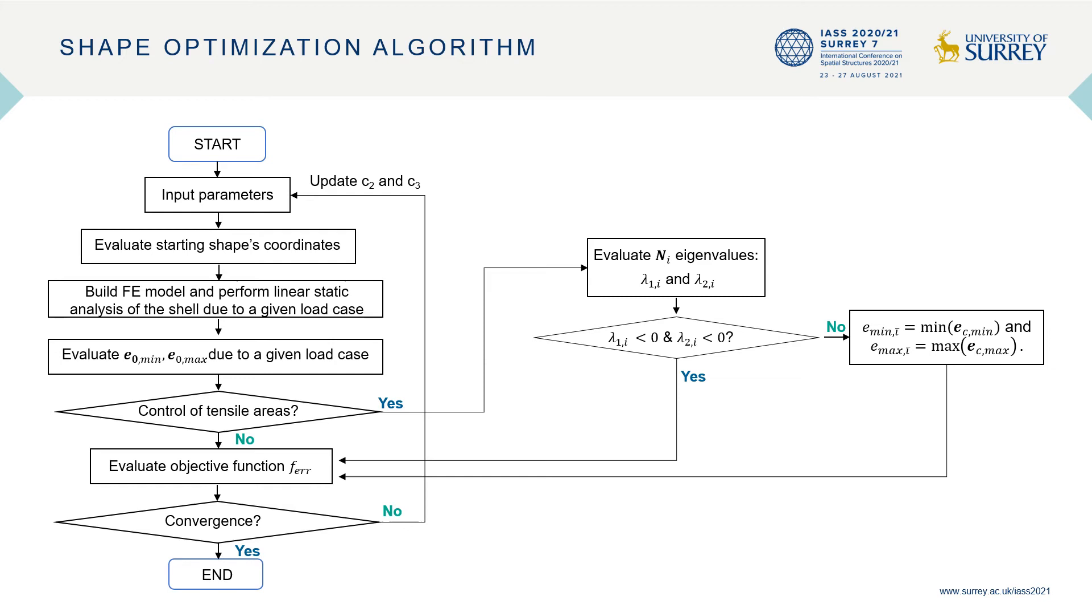This is a scheme of the shape optimization algorithm. First, a few input parameters should be decided. Then the coordinates of the starting shape are evaluated and used to build a finite element model. In the following step, a linear static analysis of the structure subject to a given load case is performed and the minimum and maximum eccentricities are computed. It is possible to apply a penalty to the tensile areas.